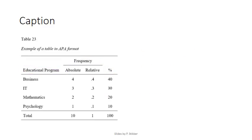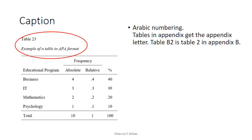The caption of a table is the part on top of it. There are a few things to note here. The first is the number itself — in this case, number 23. This should be Arabic numbering, so 1, 2, 3, 4 — not Roman numerals like I, II, III, IV, etc.